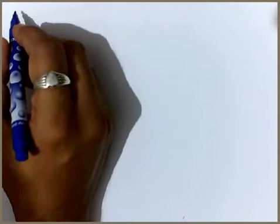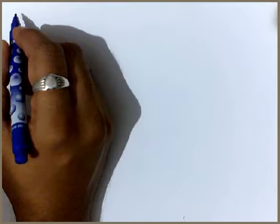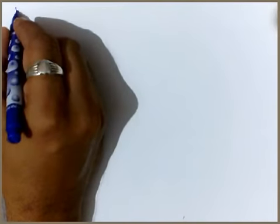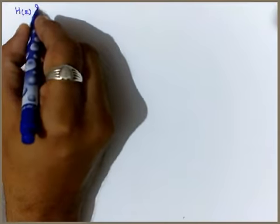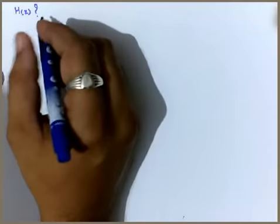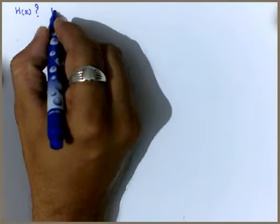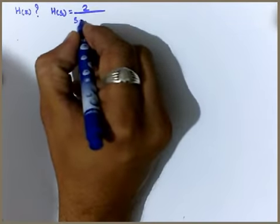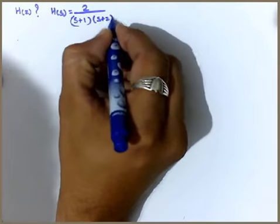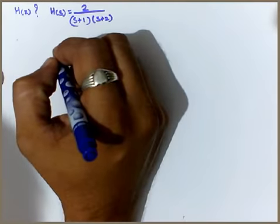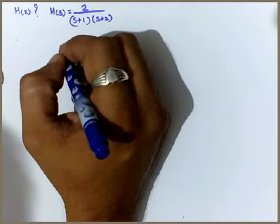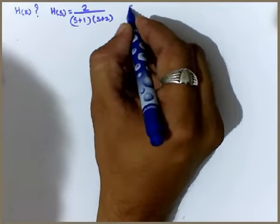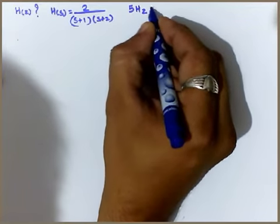Hello students, we are discussing a numerical based on the impulse invariance method. We need to obtain H(z), and H(s) is given as 2 / ((s+1)(s+2)). The sampling frequency for this method is given as 5 Hz.